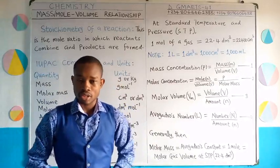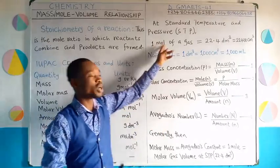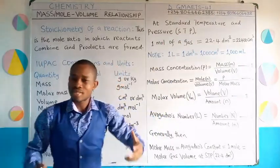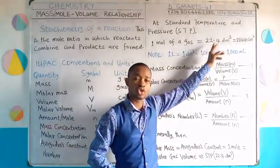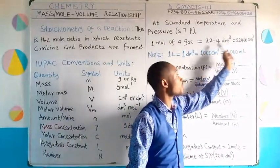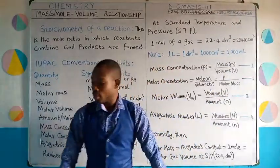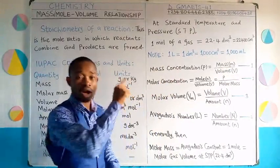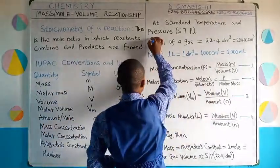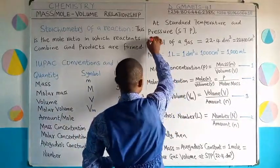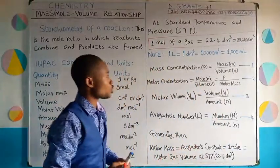At standard temperature and pressure (STP), what volume will one mole of a gas occupy? One mole of a gas at standard temperature and pressure will occupy a volume of 22.4 dm³. To convert from dm³ to cm³, multiply 22.4 dm³ by 1000, which gives you 22,400 cm³. One mole of a gas always occupies that volume, and we refer to this number as the molar gas volume.